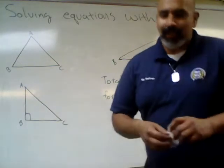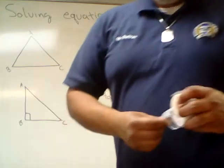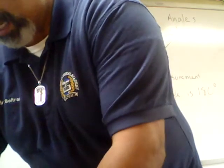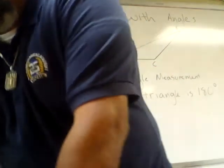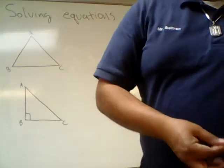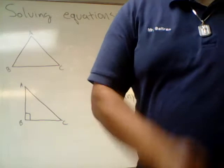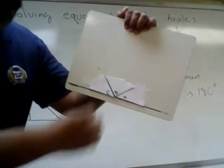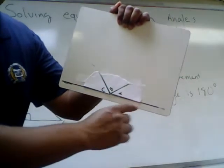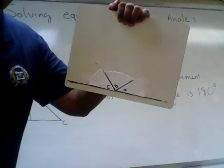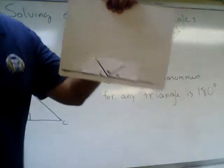If you feel like doing this at home, get some triangles, tear the corners off, and you'll get each corner of the triangles. You can reassemble them, and once you reassemble them, you will notice that the corners line up on a straight line, forming a 180-degree angle.